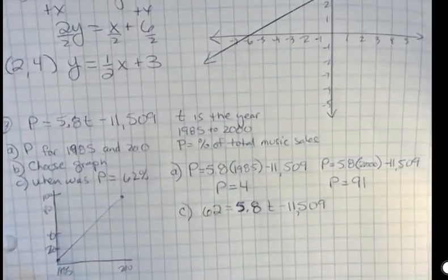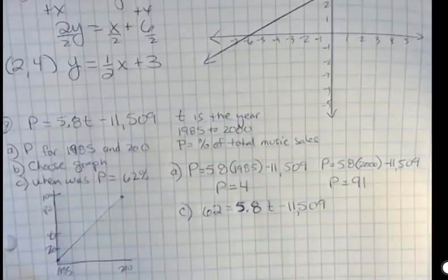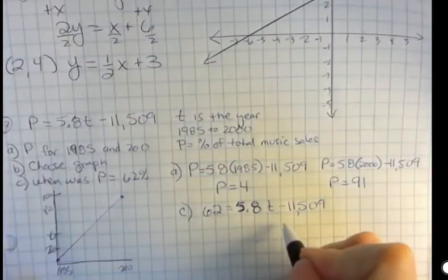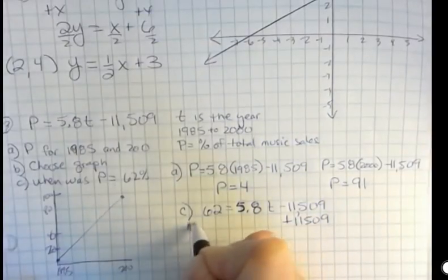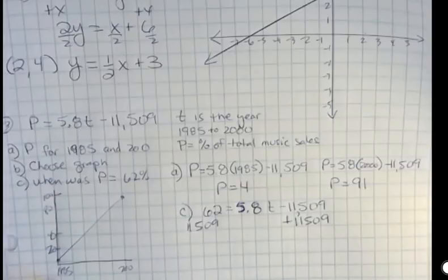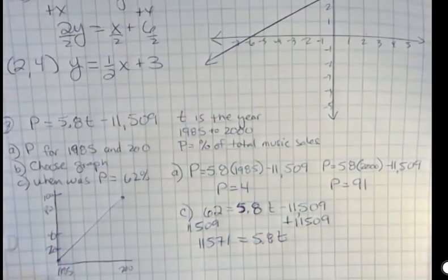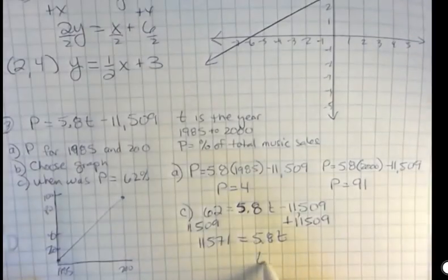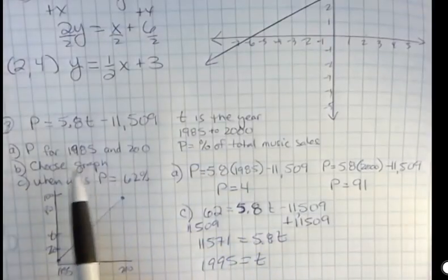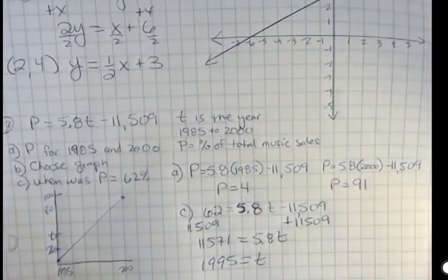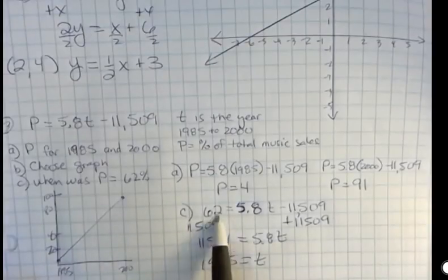So the last question is, when was the percentage 62 percent? In that case, we take our original formula and we replace the P with 62, and then we solve. We're going to solve that by adding 11,509 to both sides. 62 plus 11,509 is 11,571. And then divide both sides by 5.8. And that gives us T equals 1995. Remember, they told us this formula is only good from between 1985 to 2000. And so this makes sense. This fell within that range. So in 1995, it was 62 percent of that.